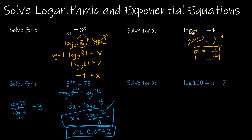For the last example with log base 10 of 100: since log base 10 of 100 means 10 to what power is 100, that's simply 2. So 2 equals x minus 7, and adding 7 gives x equals 9. If there's anything in this review you don't understand, links to the Algebra 2 course where you first learned this material will be in the description.